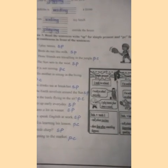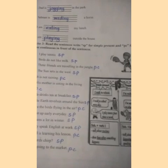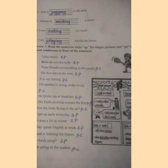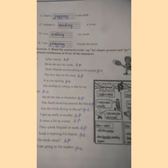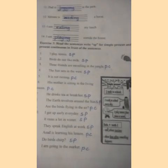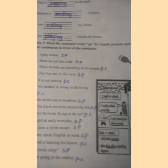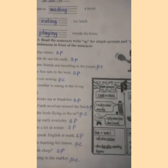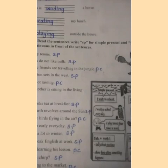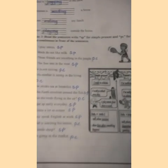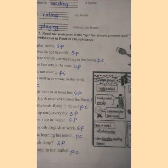Simple present talks about routine — things you do at the same time regularly. It also shows how often something happens. For example, 'I go to school by bus' — going by bus is a daily routine, so it is simple present tense. Also, 'The earth is round' is a fact that cannot change, so it is also simple present tense.